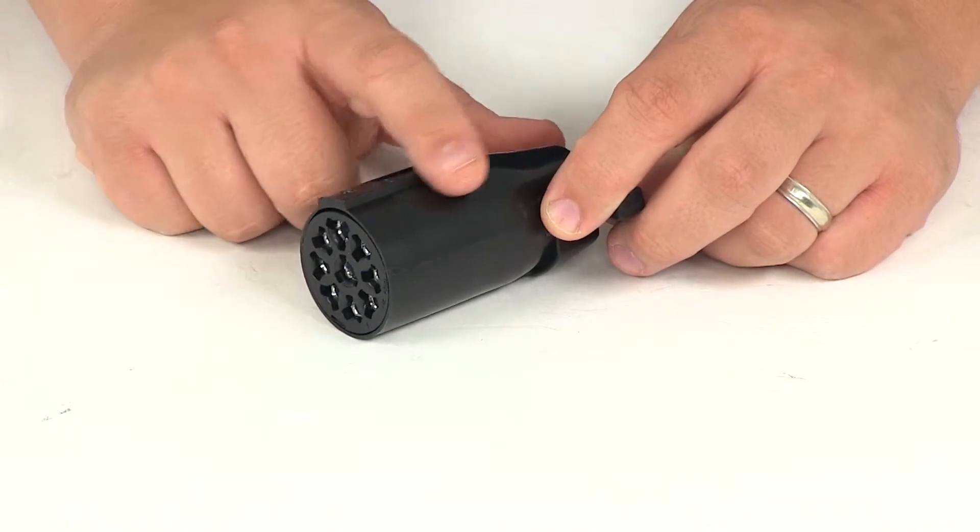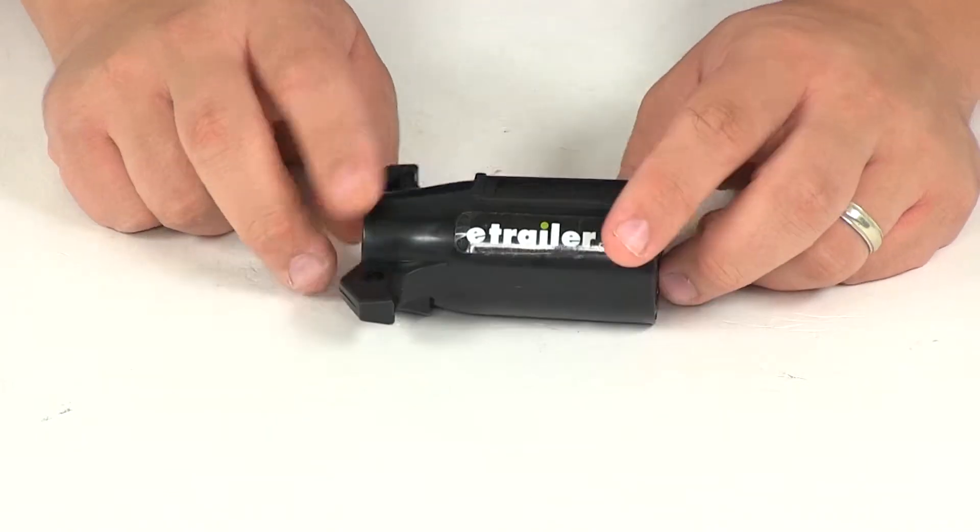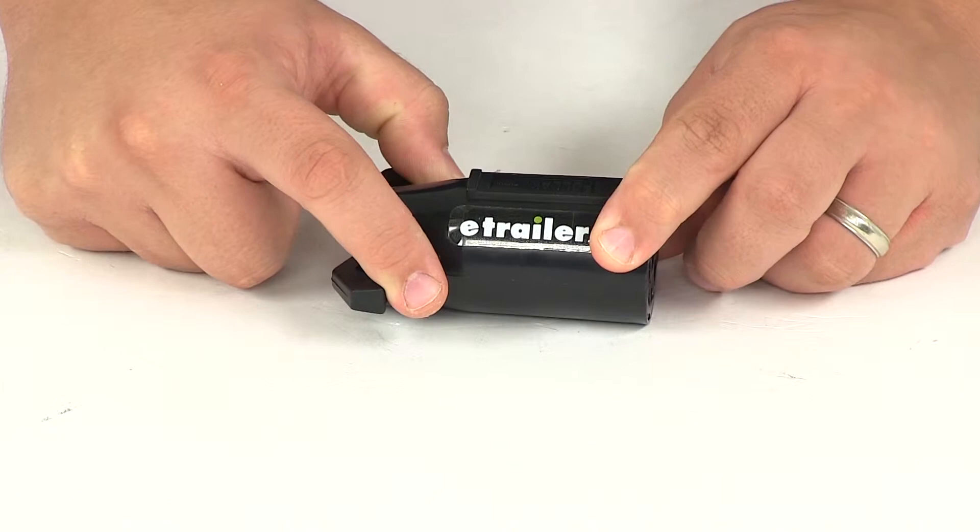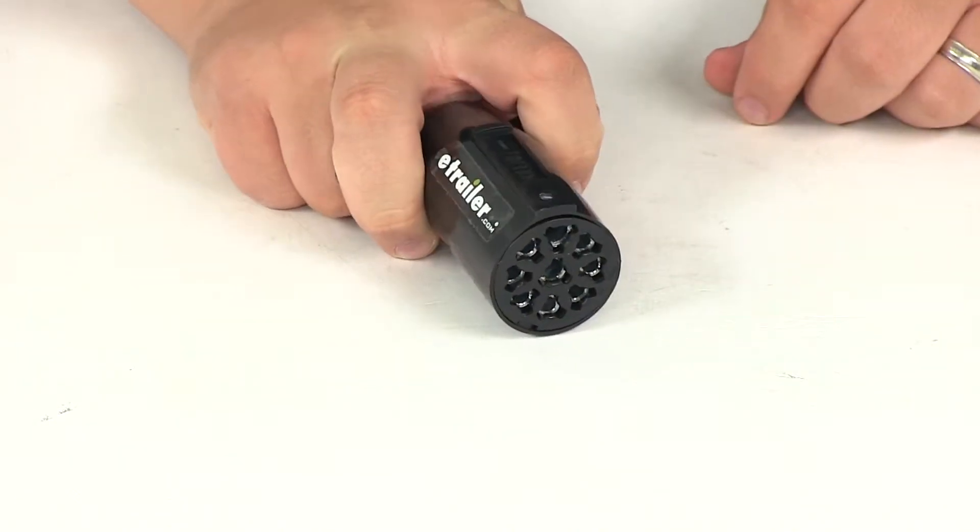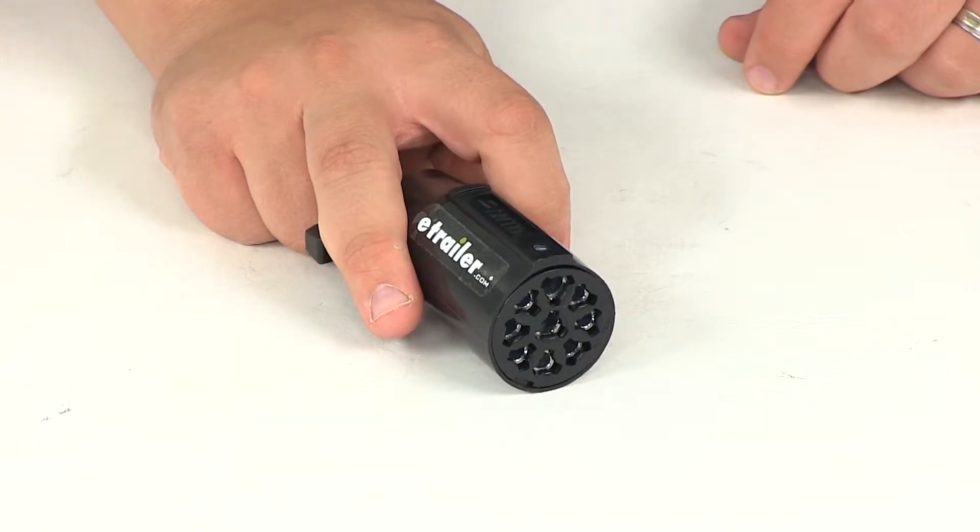It comes with a nice black plastic housing with a tapered design. It also features jumbo finger-pull grips, so you can get a nice easy grip and disconnect this system very easily from the plug.